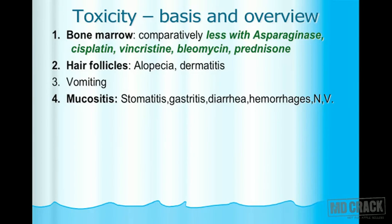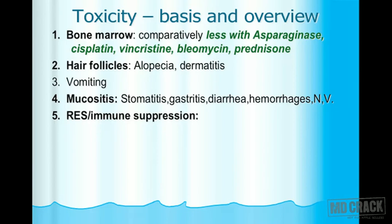The next notable adverse effect is mucositis. Mucous membranes are a rapidly multiplying cell type, so anti-cancer drugs affect them first. You get inflammation at various mucous membranes — notable ones include stomatitis, glossitis, and gastritis. This can lead to diarrhea, hemorrhage, and the mucous membranes may also be responsible for nausea and vomiting.